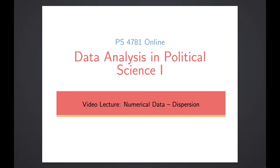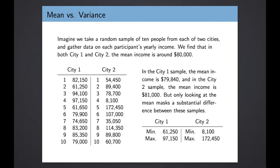In the previous lecture we talked about measuring the mean of a distribution and describing a distribution of data overall. In this lecture we're going to talk about measures of dispersion around a mean for a distribution and introduce the concepts of variance and standard deviation. Let's begin by building a little bit of intuition about why understanding the dispersion of data, not just the mean of data, is important for getting an understanding of what that data is telling us.